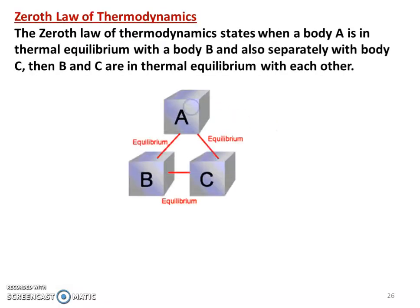The zeroth law of thermodynamics. Look at the diagram — there are three systems: system A, system B, and system C. What is the zeroth law of thermodynamics? There is a word: equilibrium. Thermodynamic equilibrium includes thermal equilibrium, mechanical equilibrium, and chemical equilibrium.